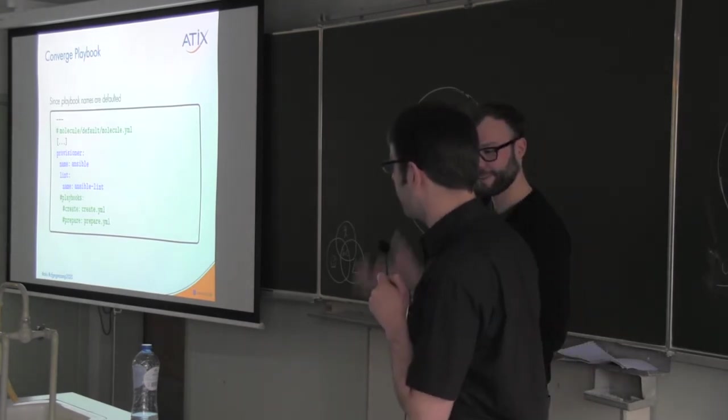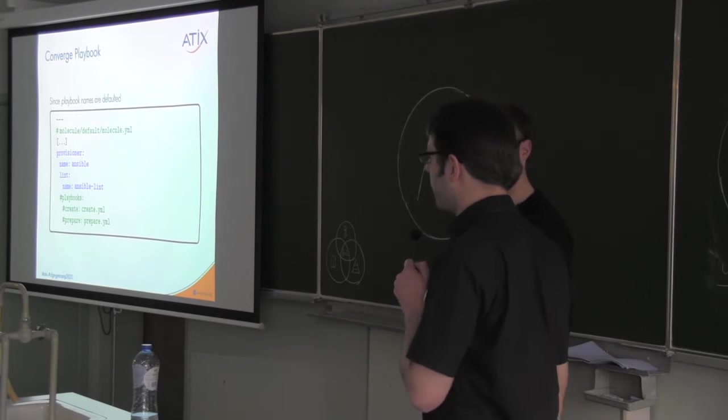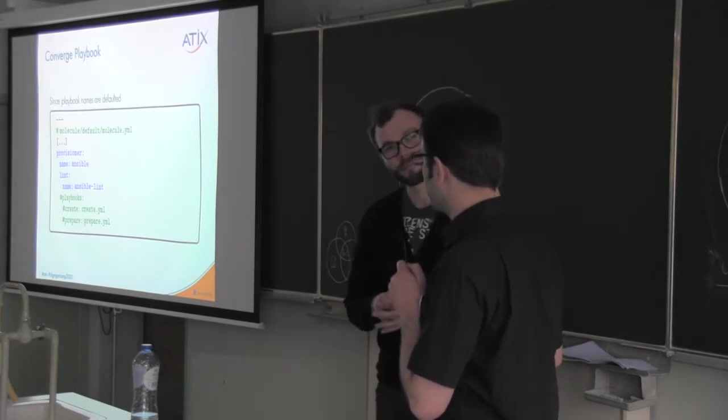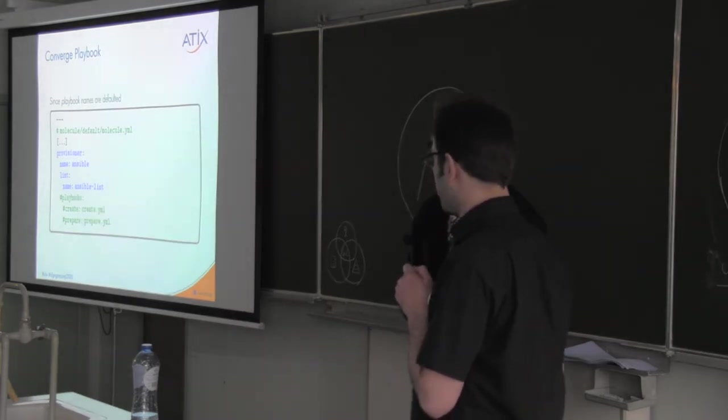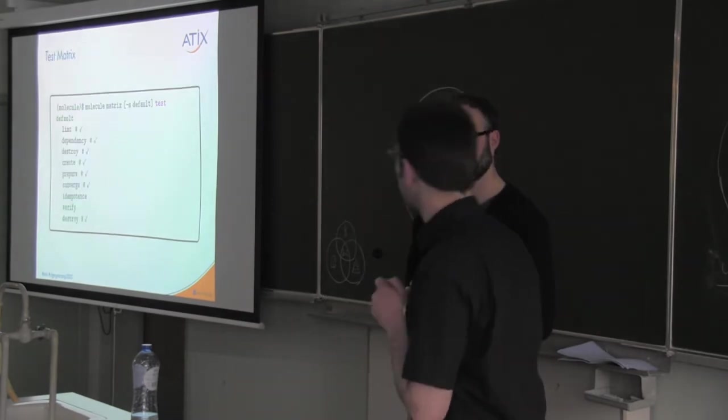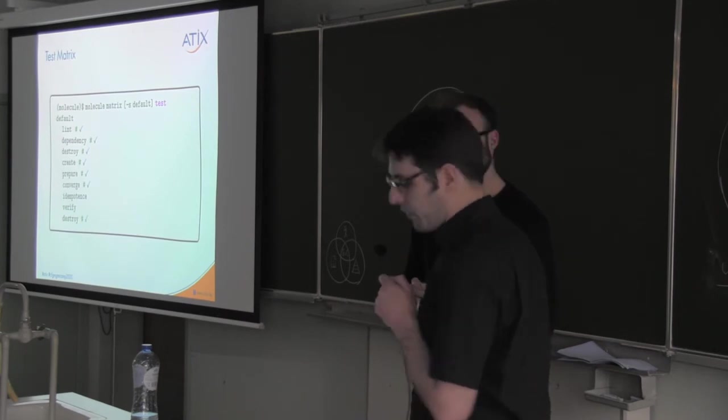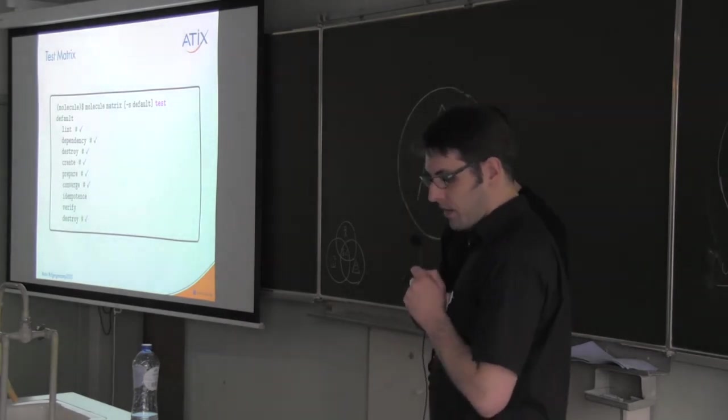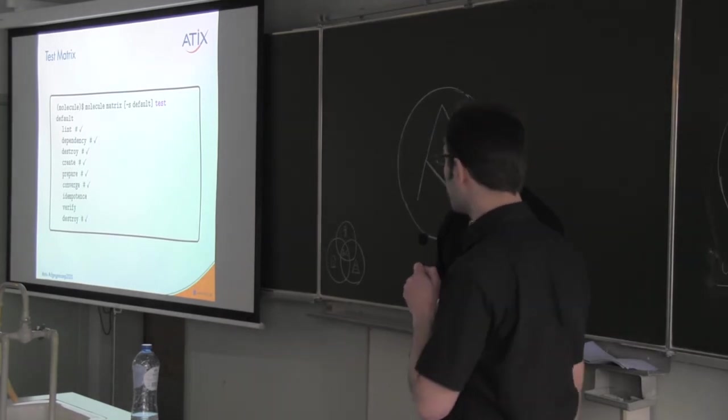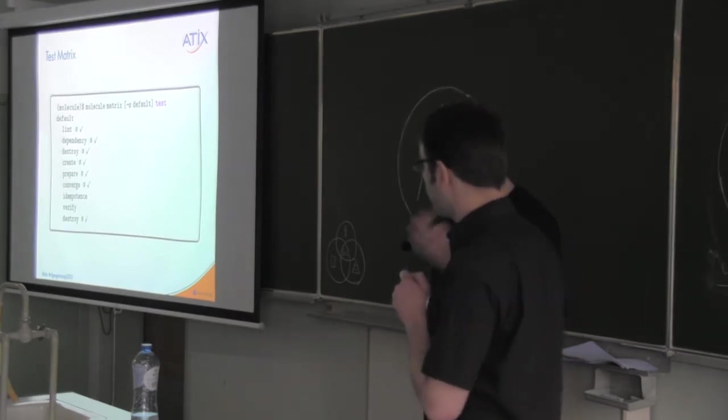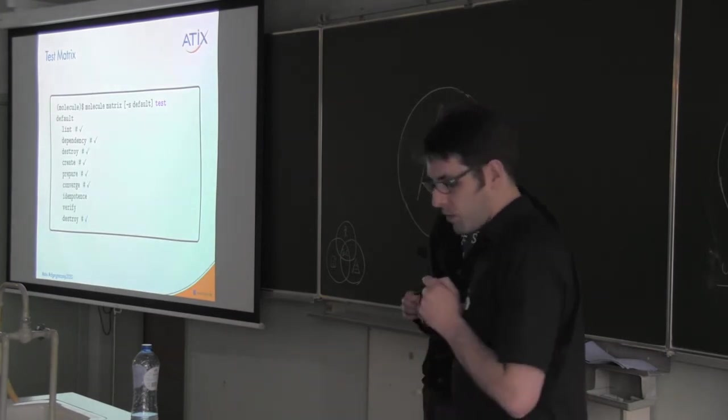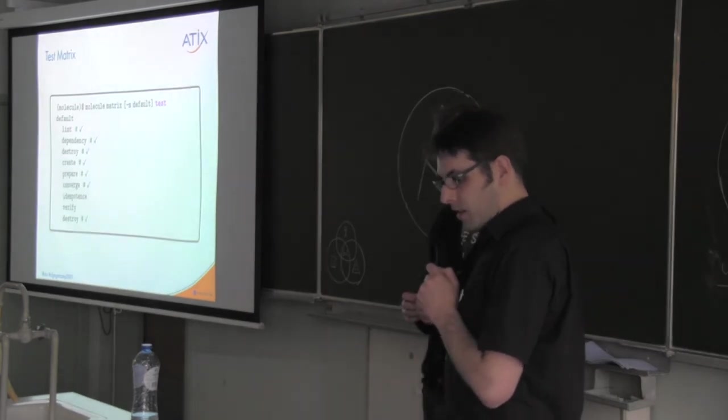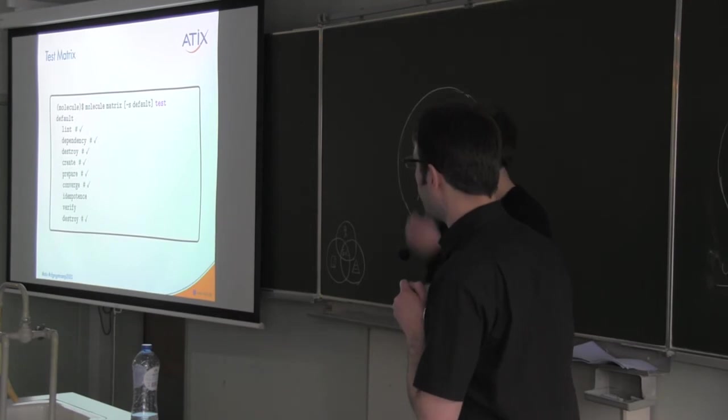I think this slide is going to say that I can customize create and prepare and probably the destroy step, but we don't need it. We use the playbooks from the Docker provider because they have common names. They are bundled. They are just looked up inside the molecule tree. Yeah. So we have now seen that all of those steps: linting, dependency, destroy the old machines, create new ones, prepare them, converge them to the state the role is supposed to be putting the machine, and now is idempotence.